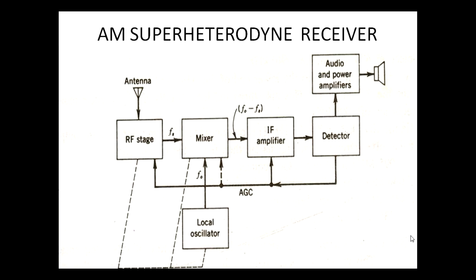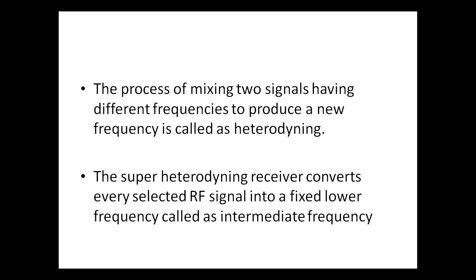Welcome all. Today we will study about AM superheterodyne receiver. This is the simplified block diagram of AM superheterodyne receiver. The process of mixing two signals having different frequencies to produce a new frequency is called heterodyne. In our superheterodyne receiver, it converts every selected RF signal into a fixed lower frequency called intermediate frequency.